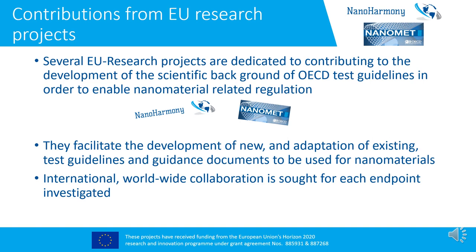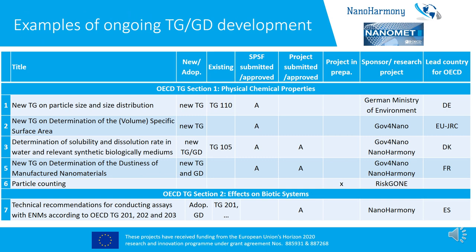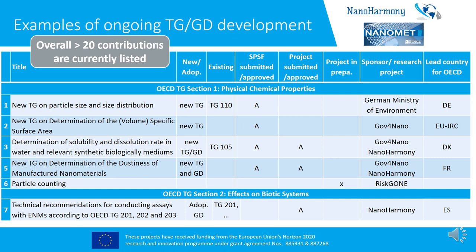Regarding test guideline endpoints, we already have a long list of test guidelines being developed, but also quite a few that still need to be developed. An example shows seven out of more than 20 test guidelines in our list, with different sponsors — sponsors can be OECD member countries, industry, EU projects such as GoFoNano, RISCON, or NanoRigo, or other international projects. Having more than 20 contributions shows the need for coordinating efforts to avoid duplication of research work.